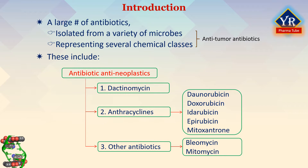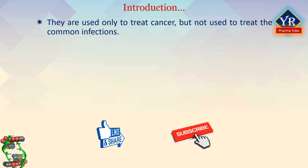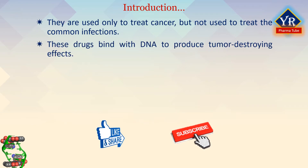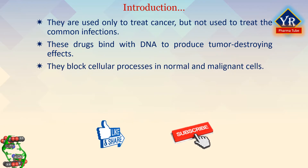Dactinomycin, anthracycline antibiotics, bleomycin, and mitomycin are all diverse antibiotic substances isolated from a variety of Streptomyces species which are too toxic to be used as antimicrobial drugs but are widely used in the chemotherapy of cancer. Doxorubicin, danorubicin, and epirubicin belong to the group called anthracyclines. Idarubicin and mitoxantrone are derivatives of anthracyclines. These drugs bind with DNA to produce tumor-destroying effects and block cellular processes in normal and malignant cells.